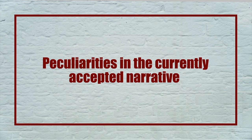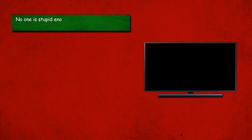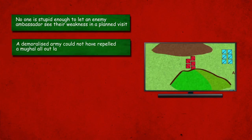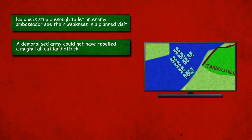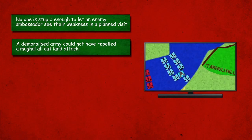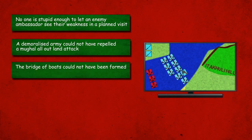Peculiarities in the Currently Accepted Narrative. This is the fresh part of the video. There are several peculiarities worth pointing out. First: the Mughal ambassador reported a breach in the defences of the Andherubali Sandbank while returning from a meeting with Lachit. Can anyone be that careless as to allow an enemy ambassador to see their weakness when they knew he was coming? Second: the Mughal all-out land attack on the north bank was repelled — does that look like the work of a demoralized army? Third: a fleeing navy turns around to form a bridge of boats across a river nearly a kilometer wide, with no communication technology. This is simply impossible unless the move was premeditated.